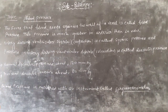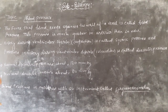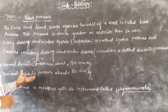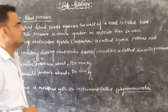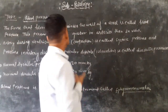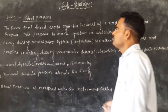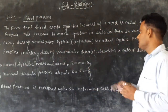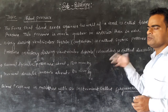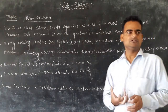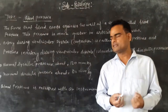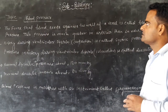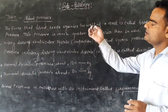Blood pressure involves two processes: systolic pressure and diastolic pressure. What is the contraction and relaxation? Two processes are present: contraction and relaxation. The heart's contraction and relaxation is the process for blood pressure.